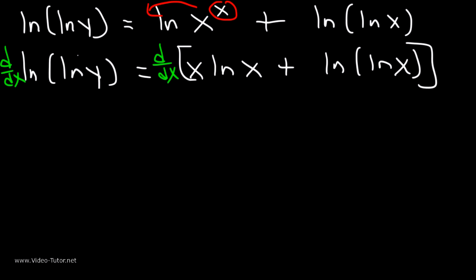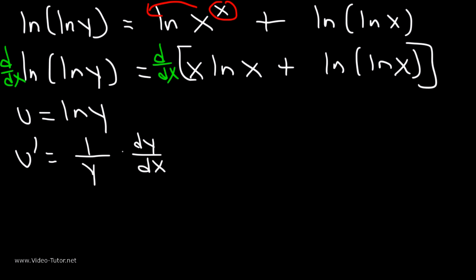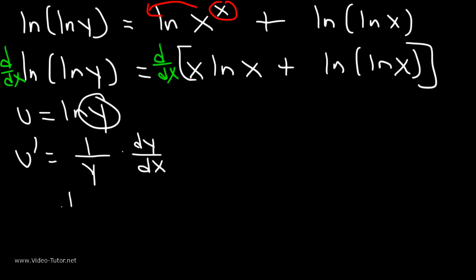Now let's apply that to our function. For the left side, u is the stuff on the inside, which is ln(y), and u′ is going to be the derivative of y, which is (1/y)·(dy/dx). Combining u′ over u for this entire derivative, it's going to be (1/y) divided by ln(y), times dy/dx. So that's the derivative of the left side.